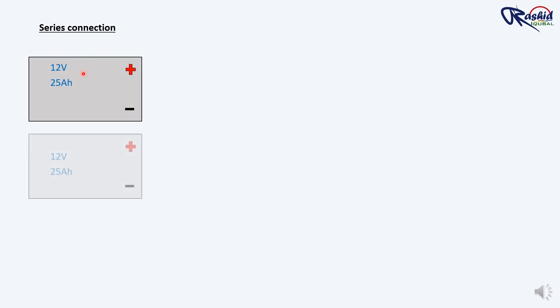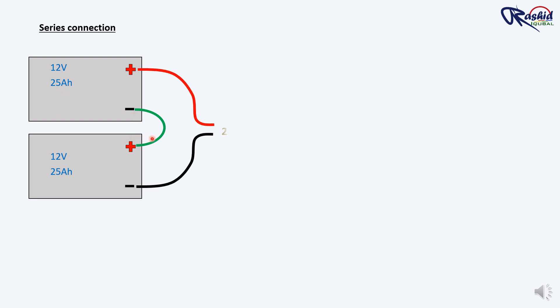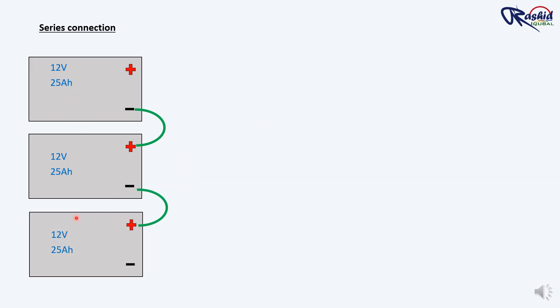Now let's talk about series connection. When batteries are connected in series, their voltages add up but the capacity (AH) remains the same. The negative terminal of one battery is connected to the positive terminal of the next. As you can see here, each battery has 12V and 25AH. When two are connected in series, total voltage = 12V + 12V = 24V, and capacity remains 25AH. With three batteries in series: 12 + 12 + 12 = 36V, capacity still 25AH.